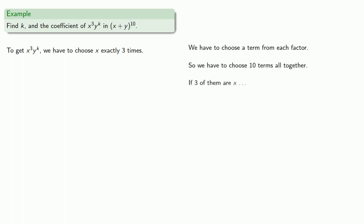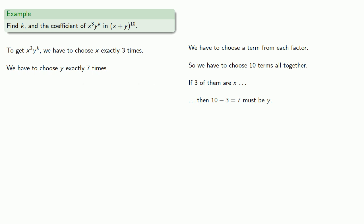So we have to choose y exactly seven times. This means we can either choose 3 of the x factors out of the 10 available, or 7 of the y factors out of the 10 available. We'll choose 3 from 10.